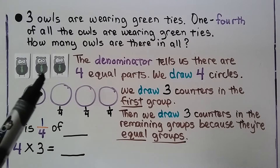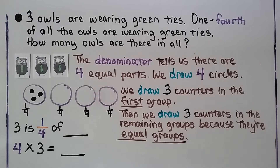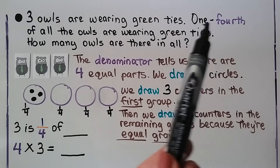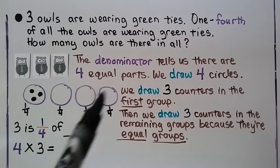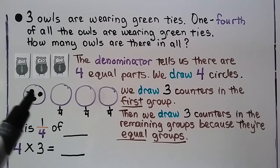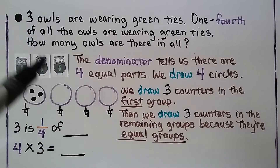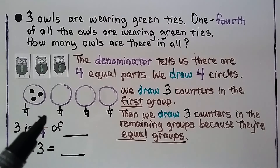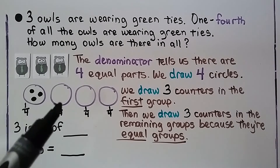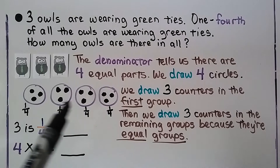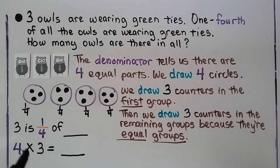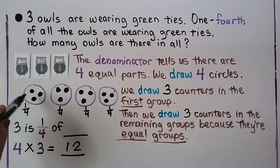Let's try another example. We have 3 owls wearing green ties, and one-fourth of all the owls are wearing green ties. So, how many owls are there in all? We have one-fourth as our fraction, and the denominator tells us there are 4 equal parts. So we draw 4 circles. Because 3 owls are wearing green ties, we draw 3 counters into the first group, then 3 counters in the remaining groups because they're equal groups. We have 4 groups with 3 in each group — 4 times 3 is equal to 12. So 3 is one-fourth of 12.